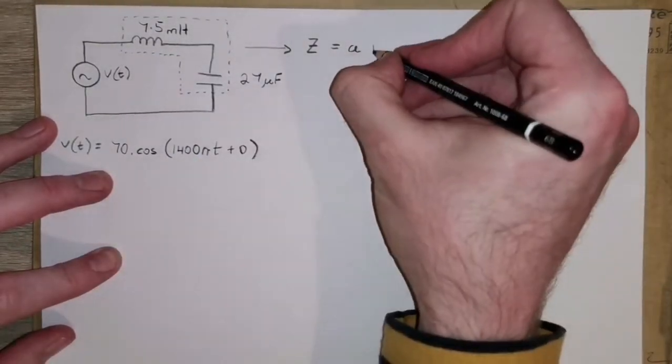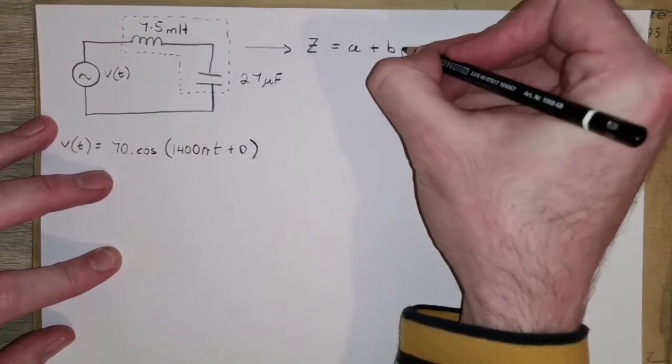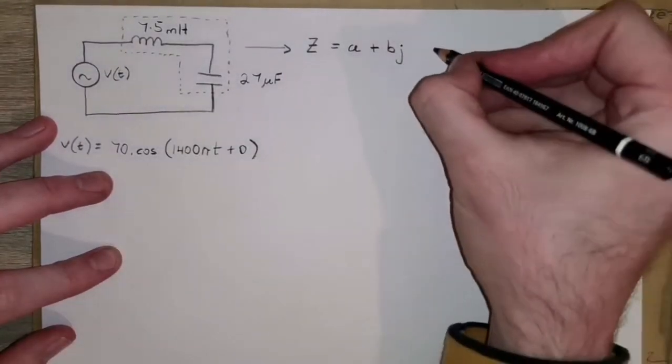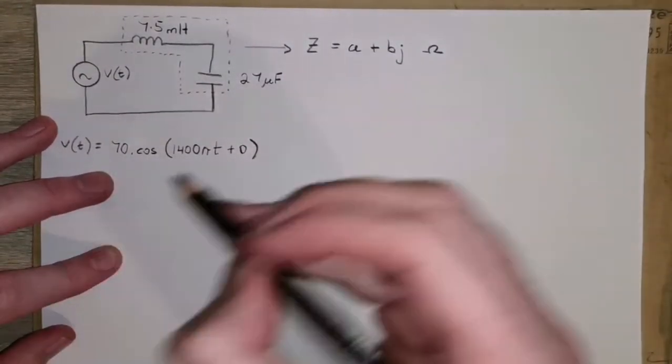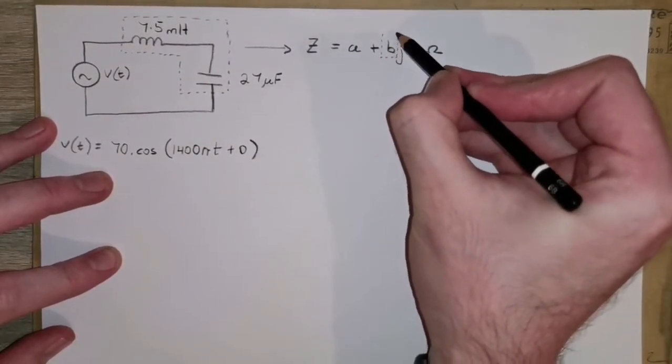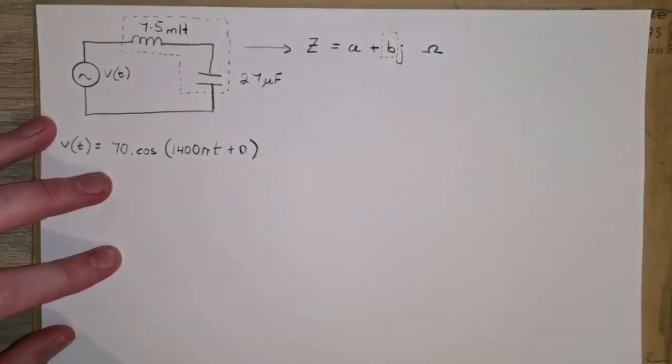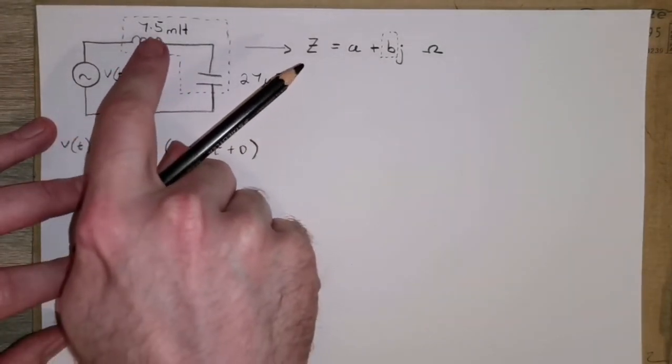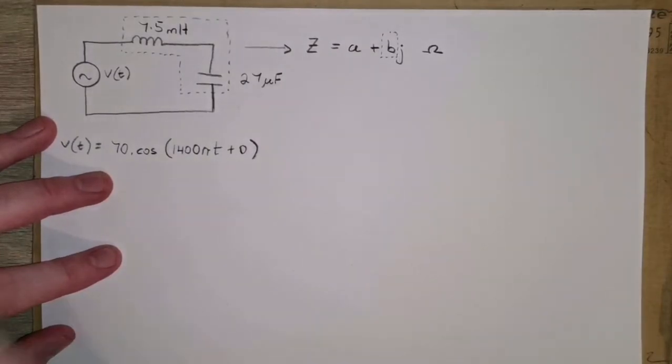And the question is essentially looking for you to work out the value of the reactive part for this entire impedance. So the approach to doing this involves getting the impedance of each element of the circuit, adding them together because they're in series, and then working out what the overall imaginary part is.